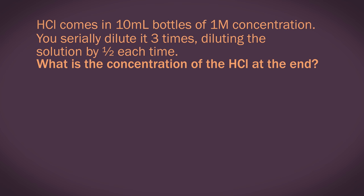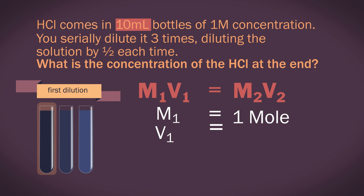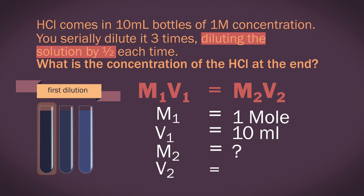So let's look at an example. As before, we start with our equation M1V1 equals M2V2. For the first dilution, M1 equals 1 Molar, V1 equals 10 mL, M2 we do not know, and V2 equals 20 mL.